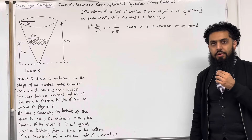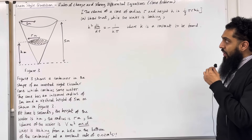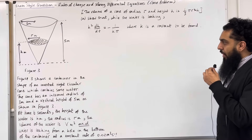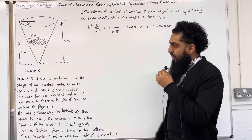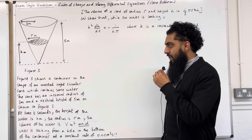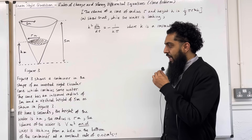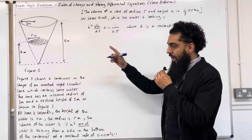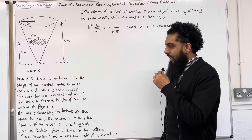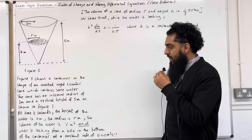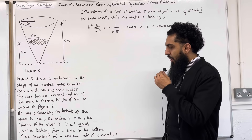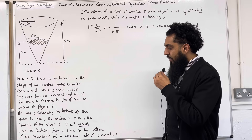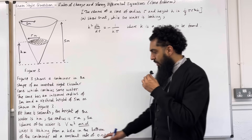Here is an exam-style question on rates of change and solving differential equations — a cone problem. Figure 3 shows a container in the shape of an inverted right circular cone which contains some water. The cone has an internal radius of 3 metres and vertical height of 5 metres. At time t seconds the height of the water is h metres, the radius is r metres, the volume of the water is V metres cubed. Water is leaking from a hole in the bottom of the container at a constant rate of 0.02 metres cubed per second.